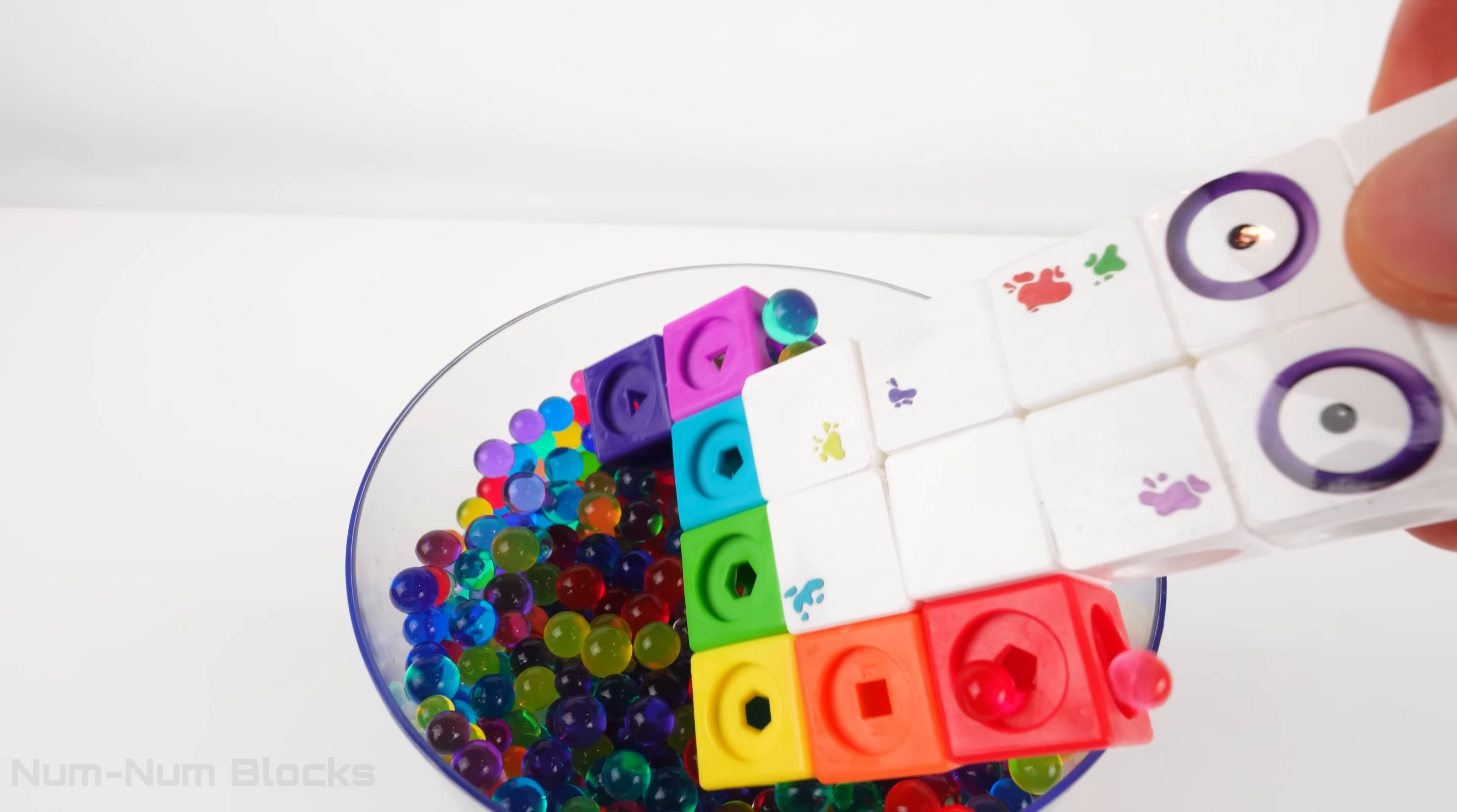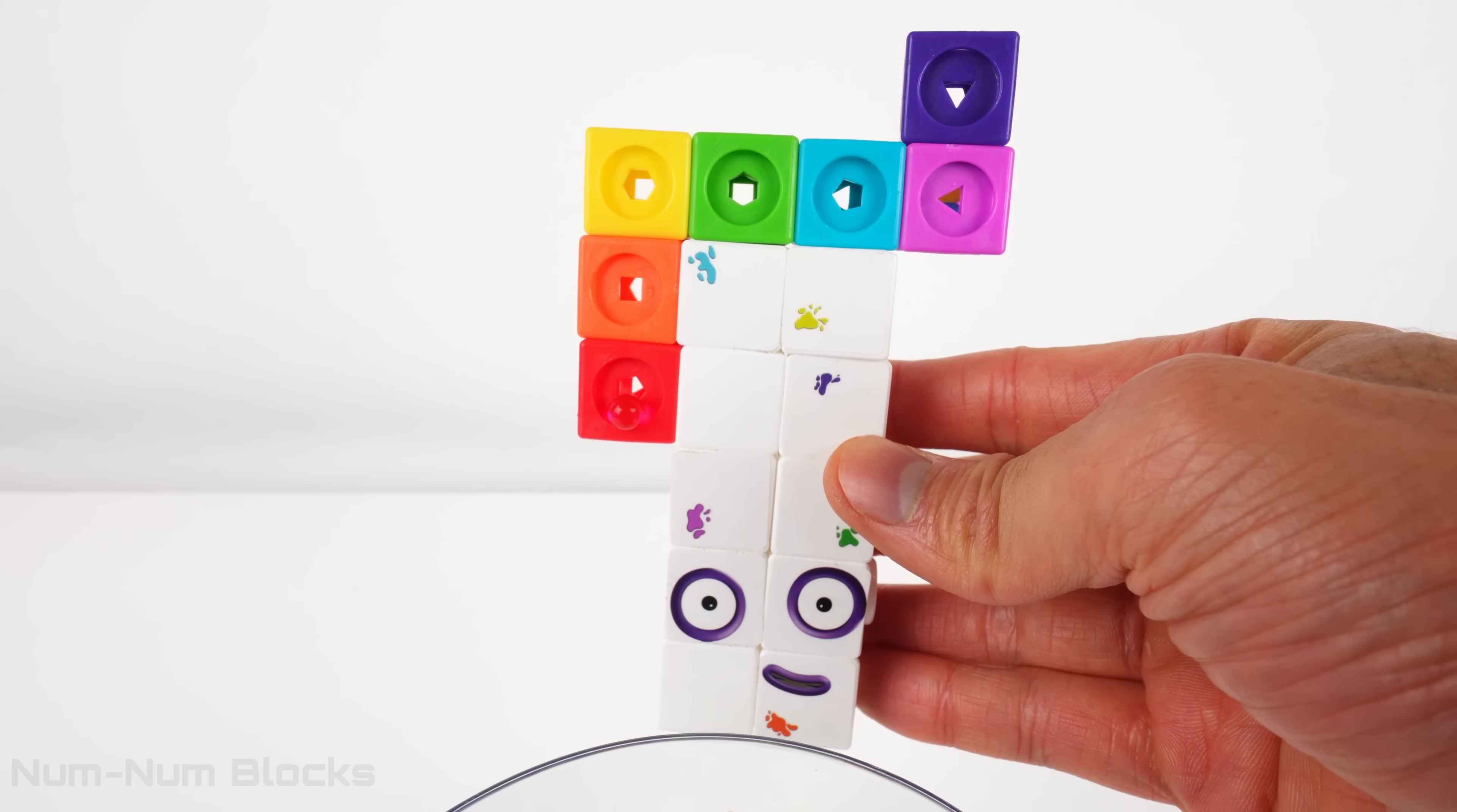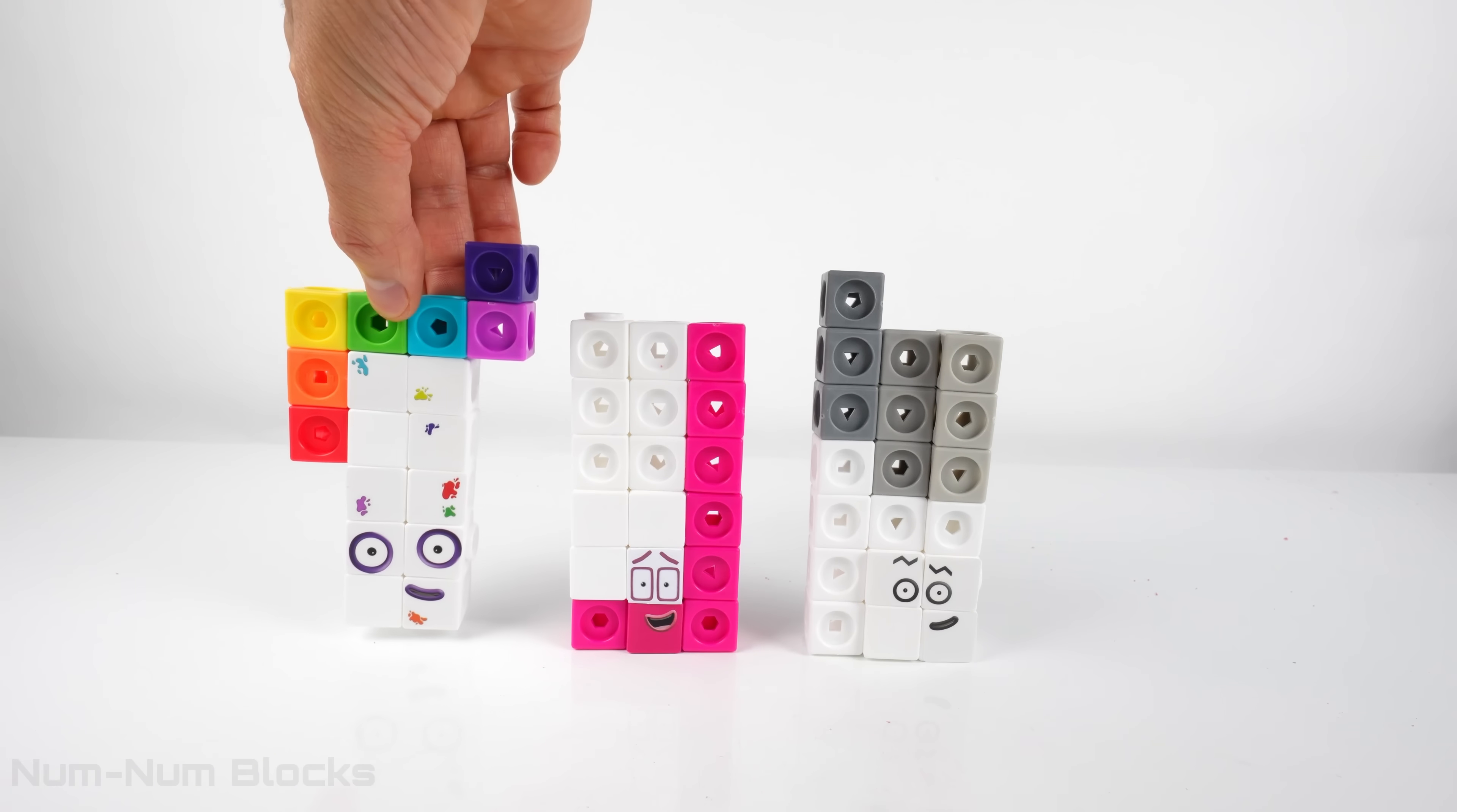We found 7 colorful blocks. 7 colorful blocks plus 10 white blocks gives us 17! 17 is the smallest number in this set. It goes to the left.